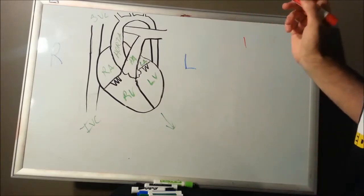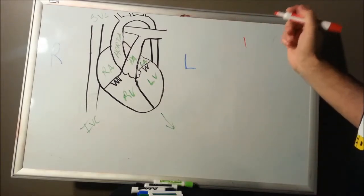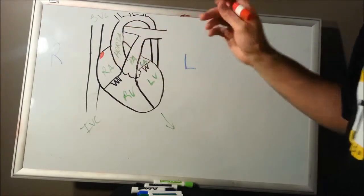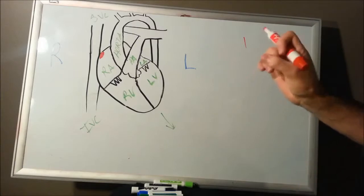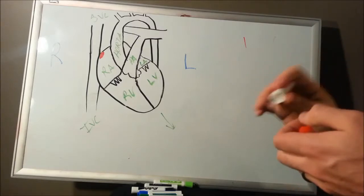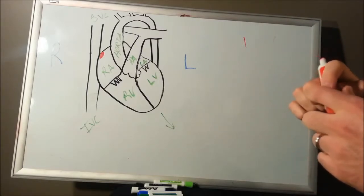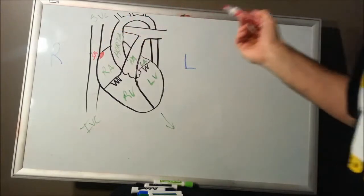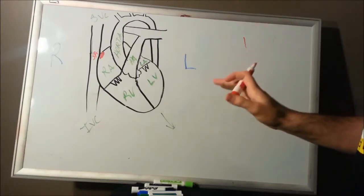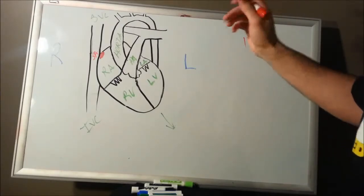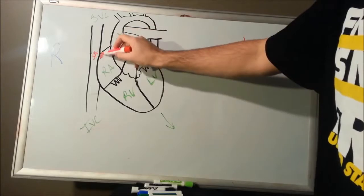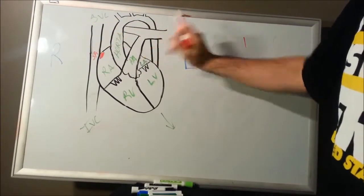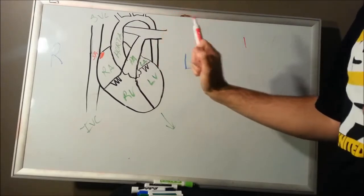So where does the conduction system of the heart start? It's going to start up at the base, in a node up here. A node is just a collection of cells that act differently than the rest of the heart. That's going to be called your sinoatrial node, also labeled the SA node. Your SA node is going to be your main pacemaker of the heart. It's going to send its depolarization action potential down through the right atrium and over to the left atrium as well, and your atria will contract at the same time.